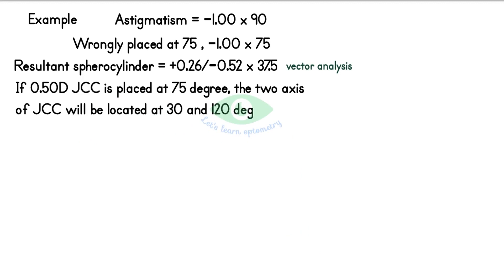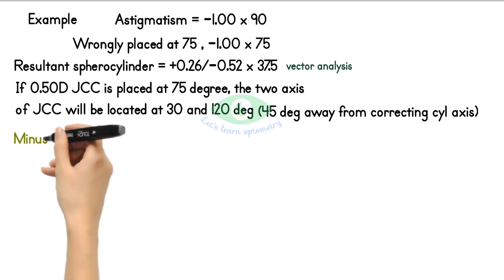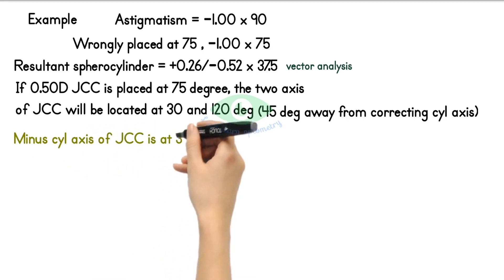So that the two principal meridians are located 45 degrees away from the correcting cylindrical axis. So 75 plus 45 gives 120, and 75 minus 45 gives 30. When the minus cylinder of the JCC is at 30 degrees.